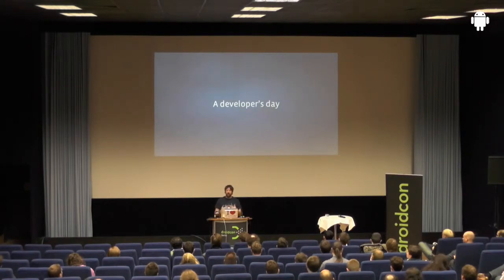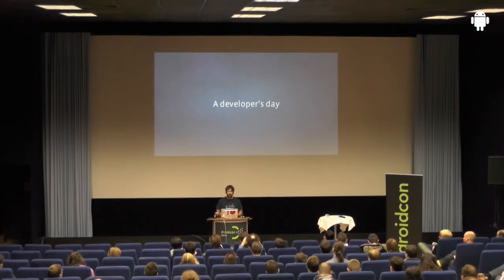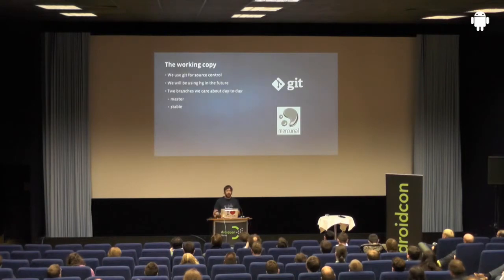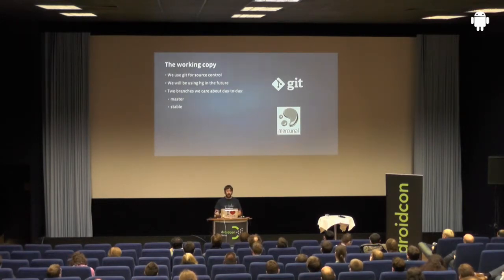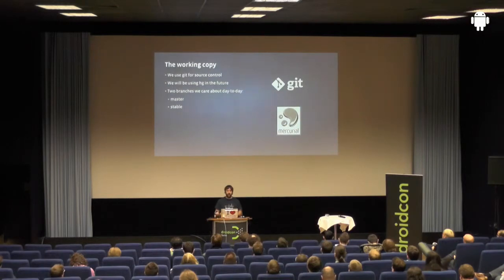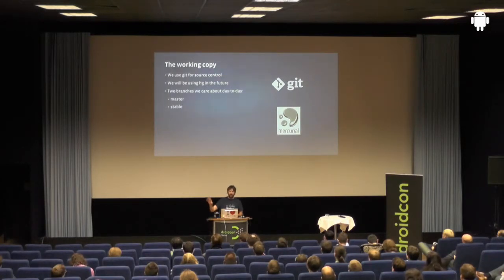So what does that actually look like? I'm going to walk you through a developer's day. The very first thing you want to do is build the software. In order to do that, you check out the source code from our source control system. We currently use Git, and we're investigating moving towards Mercurial in the future. What is relevant is that we've got two branches we use day in, day out. The main branch is master — that's trunk, where every single change lands, representing the most advanced code in the whole tree. The problem with master is we don't yet know whether it works. So we also have a branch called stable, which is known good — we've run as many tests as we can on it, and it's a really good place to start when you're working on a new feature.